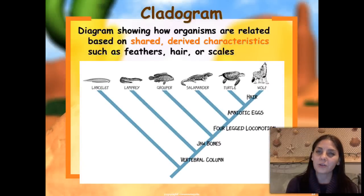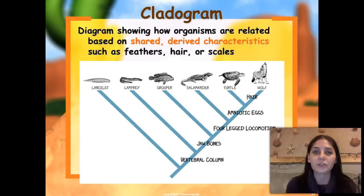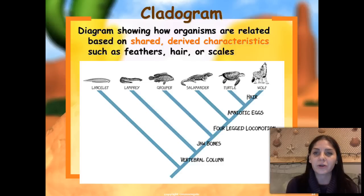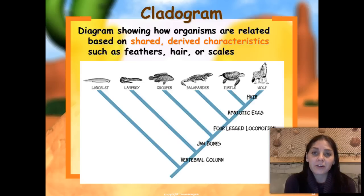Cladograms — we learned a little about these during our evolution unit. Cladograms are diagrams that show how organisms are related based on shared derived characteristics, like feathers, hair, or scales.